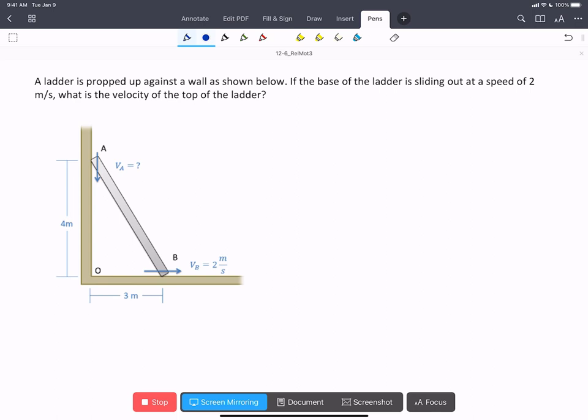In this problem we have a ladder propped up against a wall. The base of the ladder is sliding out at a given 2 meters per second. We're asked to find the velocity of the top point of the ladder.